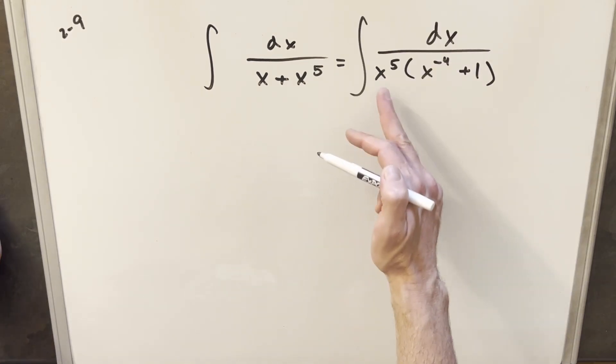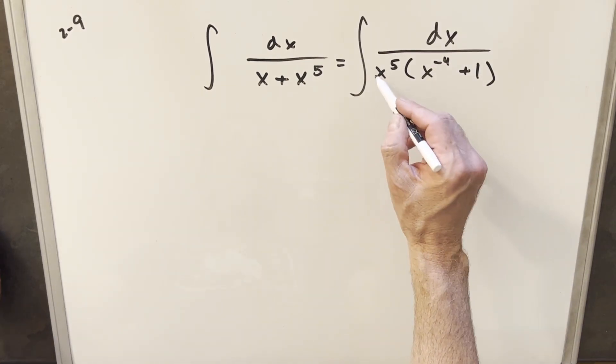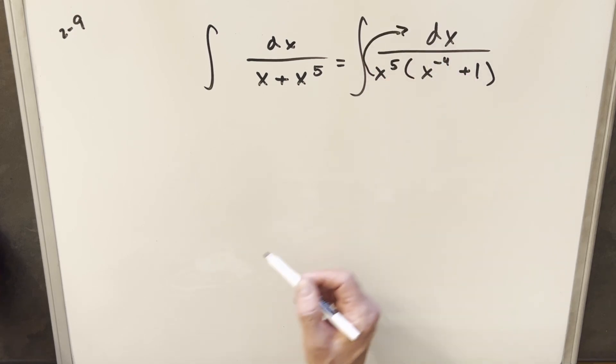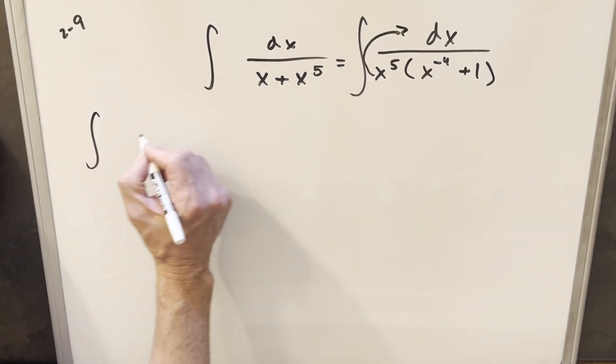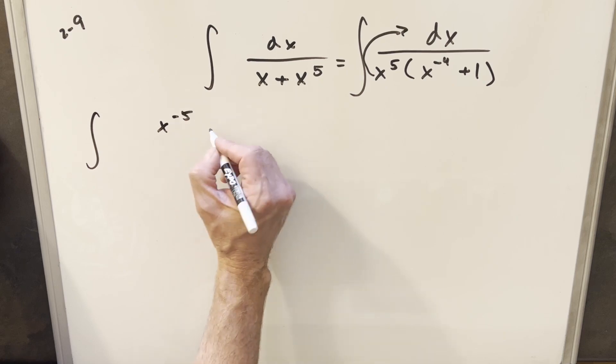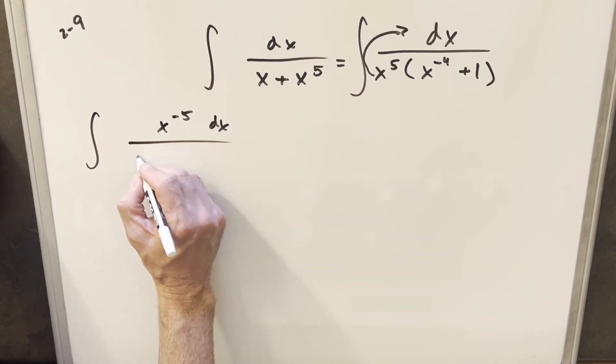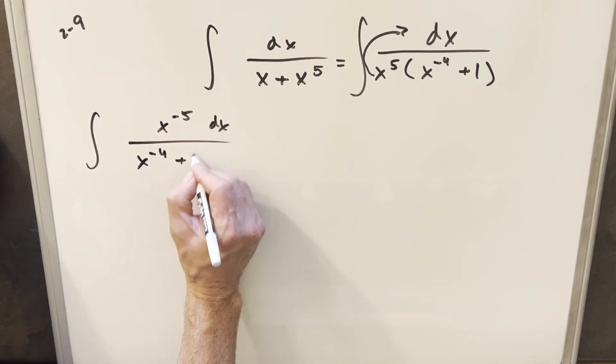And now at this point we have something to help us with a u substitution. What I can do is just write this into the numerator. I can write that as x to the minus fifth dx in the numerator, and that's going to set up our u substitution really nicely.